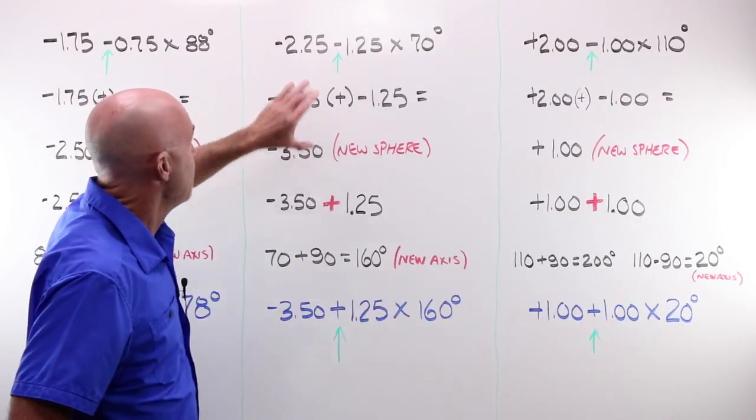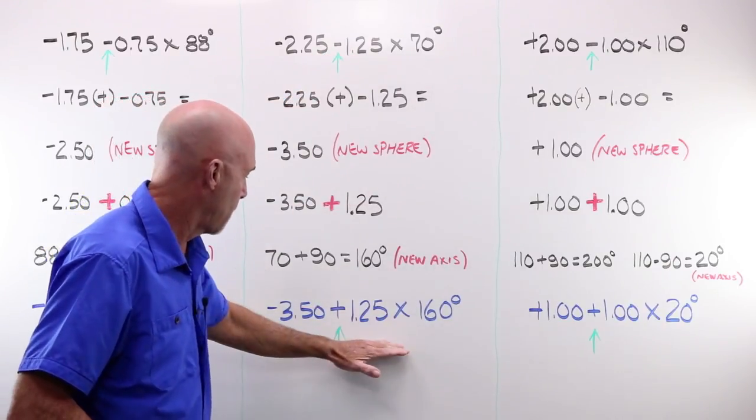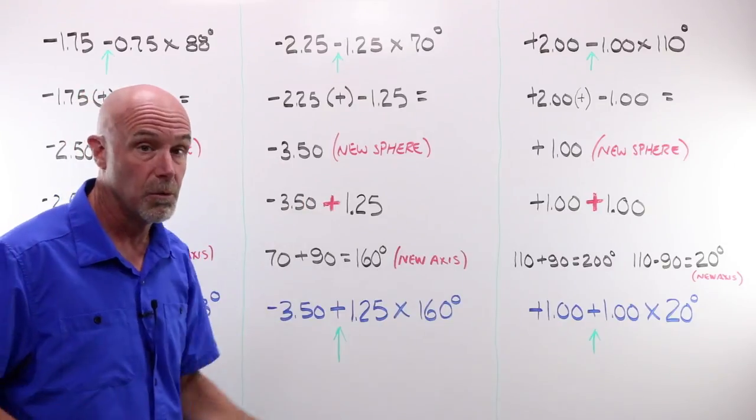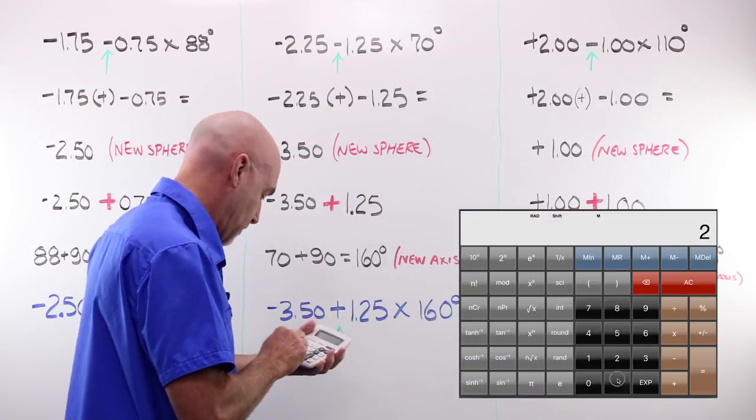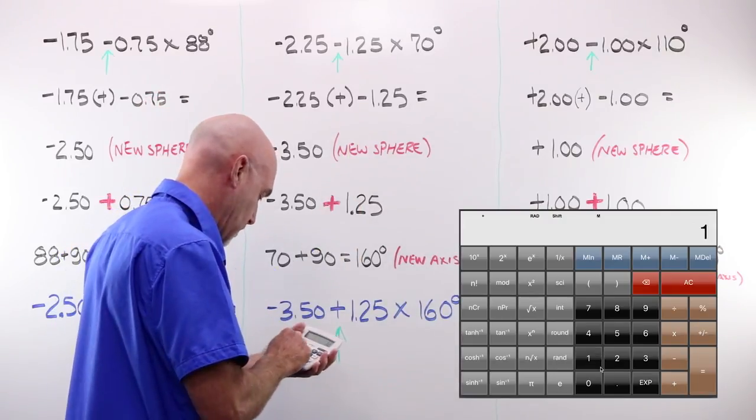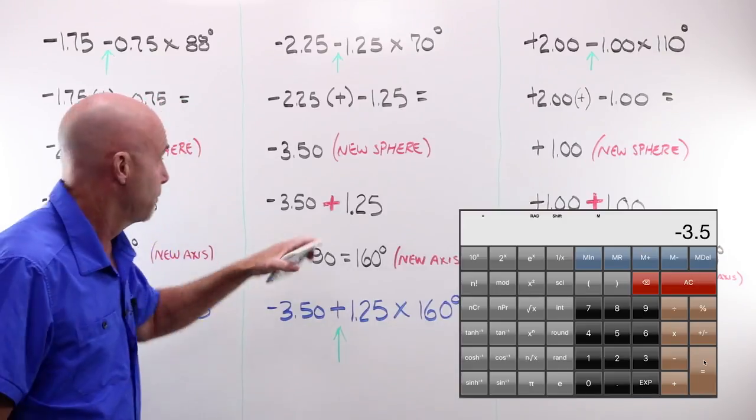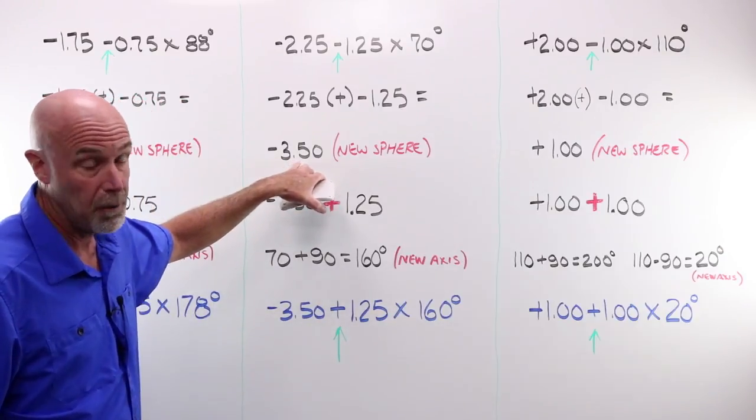If I take this lens order written in minus cylinder form, and I want to make it plus, I'm going to follow the rules. I'm going to take my minus 2.25, and I'm going to add 1.25, and I end up at minus 3.50. This is my new sphere power.